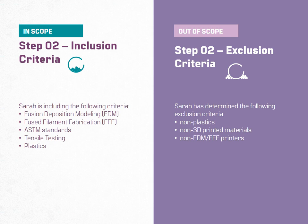Going back to our example with Sarah, she is doing a topical literature review to determine the correct test specimen geometry for tensile testing 3D printed ABS. Some search criteria she may want to consider initially are the type of 3D printer she is using — fused filament fabrication, or the trademark name, fused deposition modeling. This ensures she excludes other types of 3D printers that have different features and won't be helpful to her research.